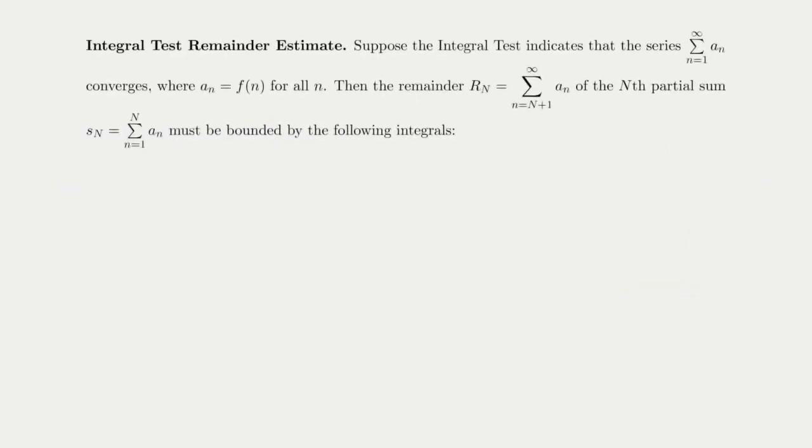The estimation of the remainder goes as follows. Suppose the integral test indicates that a series converges. In this case, the remainder that is left over after adding up the first n terms, which we'll call R sub n, must be bounded by the following integrals. The integral of f from n plus 1 to infinity as a lower bound, and the integral from n to infinity as an upper bound.